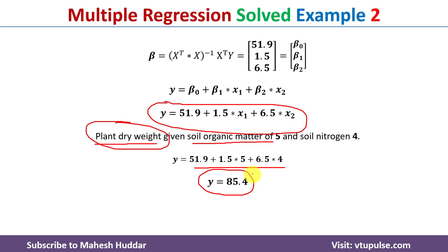This is how we can apply the multiple regression equation on a given dataset to obtain the regression equation and predict the value of a dependent variable given the independent variables. I hope the concept of multiple regression is clear. If you like the video, please like and share with your friends, press the subscribe button for more videos, and press the bell icon for regular updates. Thank you for watching.